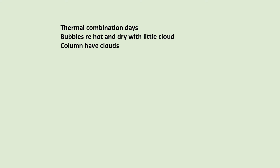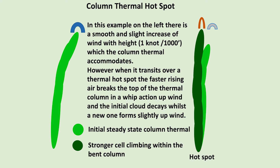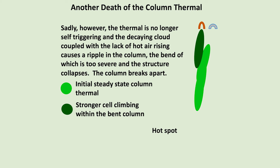Thermal combination days. Bubbles are re-hot and dry with little cloud. Columns have clouds. A column thermal hotspot: in this example on the left, there is a smooth and slight increase of wind with height — no more than one knot per thousand feet — which the column thermal can accommodate. However, when it transits over a thermal hotspot, the faster rising air breaks the top of the thermal column in a whip action upwind, and the initial cloud decays whilst a new one forms slightly upwind. Sadly, the thermal is no longer self-triggering, and the decaying cloud coupled with a lack of hot air rising causes a ripple in the column, the bend of which is too severe — and the structure collapses. The column breaks apart.